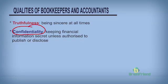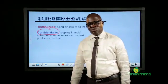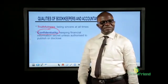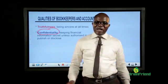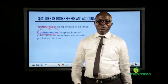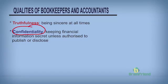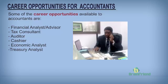Confidentiality — the accountant should keep financial information secret unless authorized to disclose or publish it. Financial information should not be open to everyone. Visitors should not walk into an organization and access the information contained in the system. Unless the accountant is authorized to disclose the information, disclosing it to everybody would mean a breach of the qualities expected of bookkeepers and accountants.